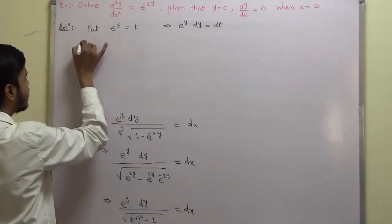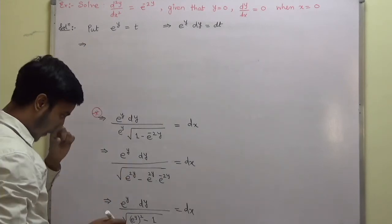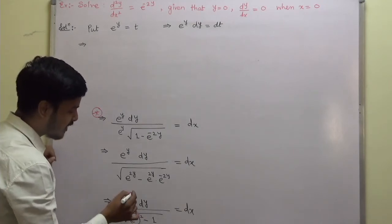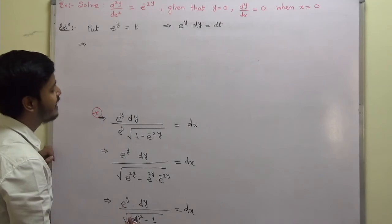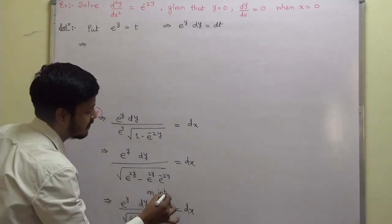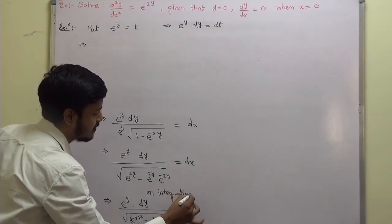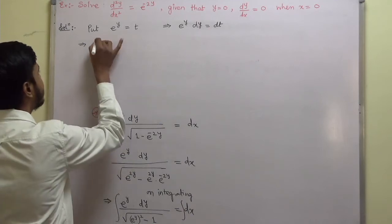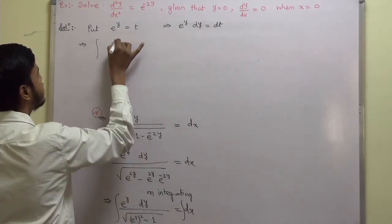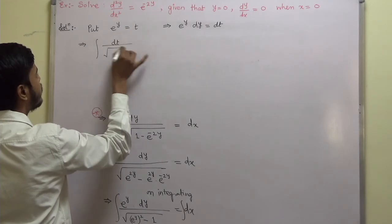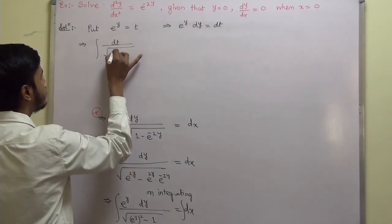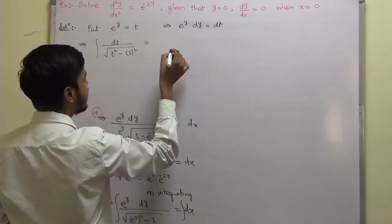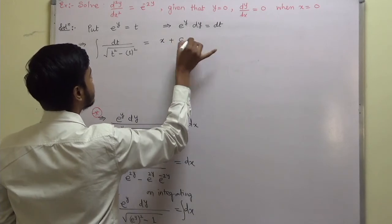On integrating, we get: ∫ dt / √(t² − 1) = ∫ dx = x + c₂.